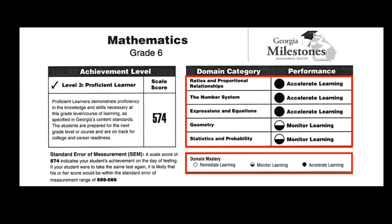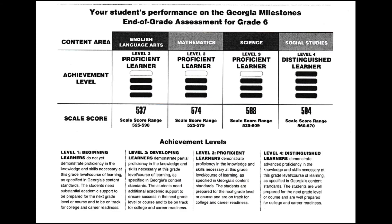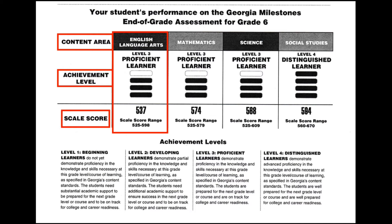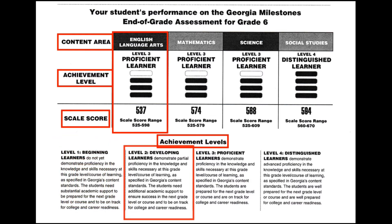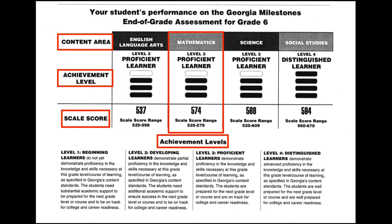This next slide gives you the actual summary of the child's performance in each subject area. You see a view of how the child performed per content area, their achievement level, and their scale score. A description of each achievement level is given at the bottom of the screen. There are four achievement levels used to describe student performance. It covers language arts, math, science, and social studies.